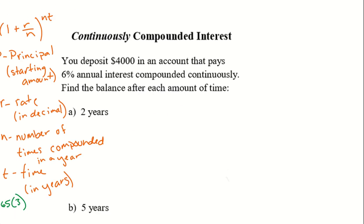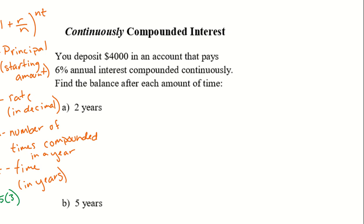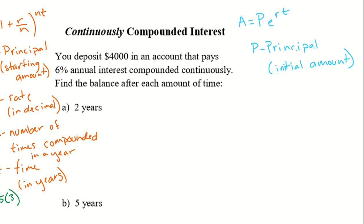The last topic is continuously compounded interest. That equation is A equals P times e to the power of RT — a lot of times we call this PERT because it looks like a word. P still stands for principal, your initial amount. E is the mathematical constant e, which you learn about in section 8.2 — if you missed that, be sure to watch that video. R is still your rate in decimal form, and T is time in years.